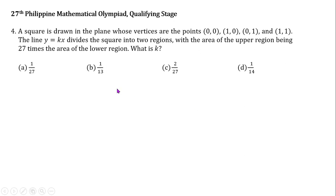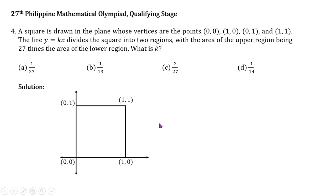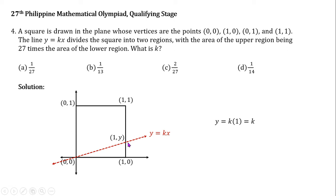Question number 4. A square is drawn in the plane whose vertices are the points (0,0), (1,0), (0,1), and (1,1). The line y equals kx divides the square into two regions, with the area of the upper region being 27 times the area of the lower region. What is the value of k? Let's create the square with the given vertices. The line y equals kx divides this region into two. The x-coordinate of the intersection point of this line on the right side of the square is 1, and substituting x equals 1 gives y equals k, so the intersection point is (1, k).